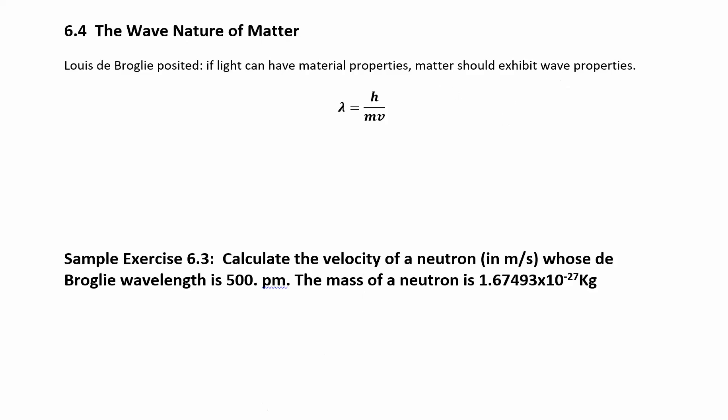He put together this equation using some of Einstein's theory. Einstein had this equation: Energy equals mc squared, but also energy is equal to hc over lambda. If I solve this equation for lambda, I'm going to multiply both sides by lambda, and then divide by mc squared. So we get lambda is equal to hc over mc squared.